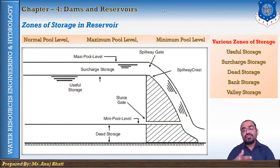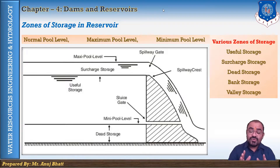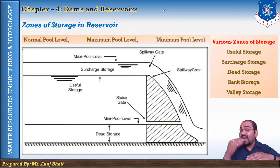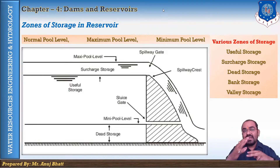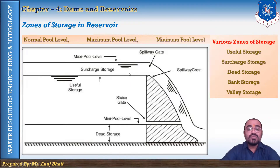The second is the surcharge storage. The volume of water stored between the normal pool level and the maximum pool level is known as the surcharge storage. Surcharge storage is an uncontrolled storage as it exists only while flooding is occurring and it cannot be retained for later use. So when there is a flood alarm, the water stored in the reservoir at that moment is considered the surcharge storage.